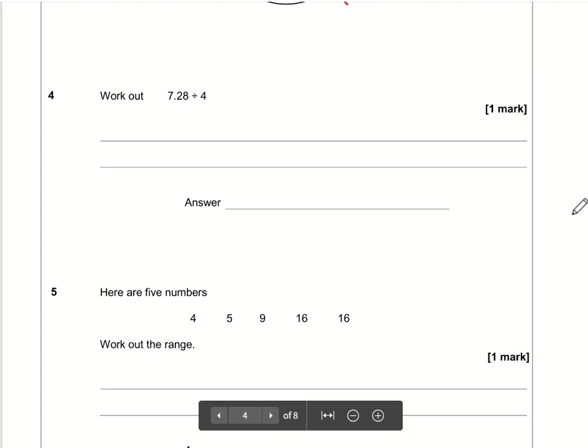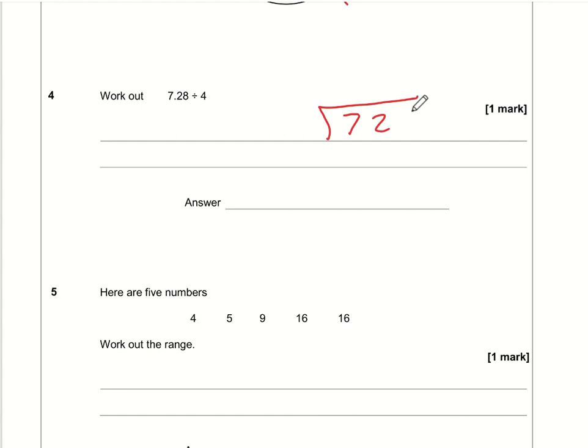Work out 7.28 divided by 4. If you can divide 728 by 4, then 7.28 divided by 4 is no harder - just put a decimal point on top of the bus stop as well. 7 divided by 4 is 1 with a remainder of 3, 32 divided by 4 is 8, 8 divided by 4 is 2, so the answer is 1.82.